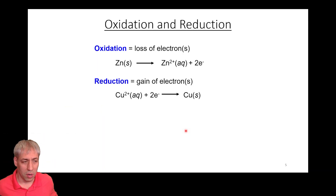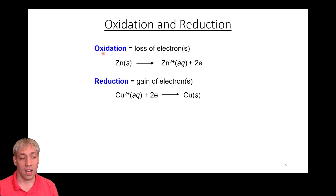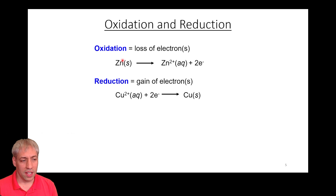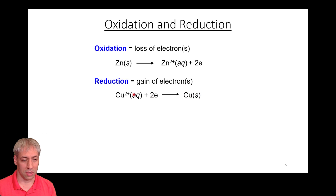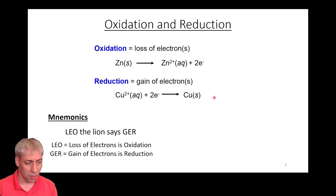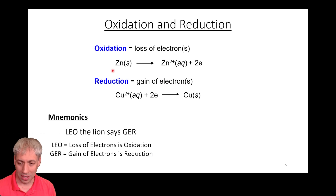We want to talk about oxidation and reduction processes. Oxidation means a loss of electrons. If zinc metal, which is zero in its metallic form, gives up two electrons, it goes to Zn²⁺ — that is oxidation. Alternatively, reduction is gaining electrons: Cu²⁺ gains two electrons to become Cu⁰. The two positive charges get canceled by the two negative charges, giving you copper in its solid form.